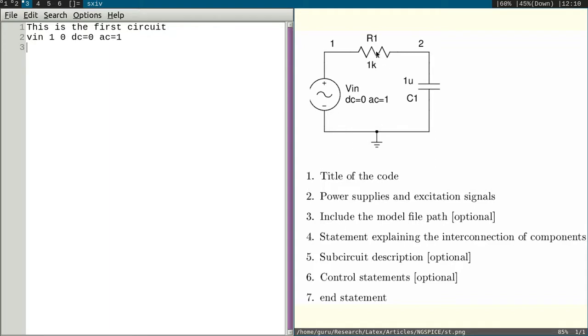Fourth part is statements explaining the interconnection of components. Apart from voltage source we have a resistor, we have a capacitor. Resistor should always start with R, its name always should start with R. So we will write R. It need not be a capital R, you can use small r also. You have to give a number. If there are two resistors you can write one resistor as R1, another one is R2. In this one we have only one resistor. I will write R1. Whatever name you want to give, you can give, but it should start with R.